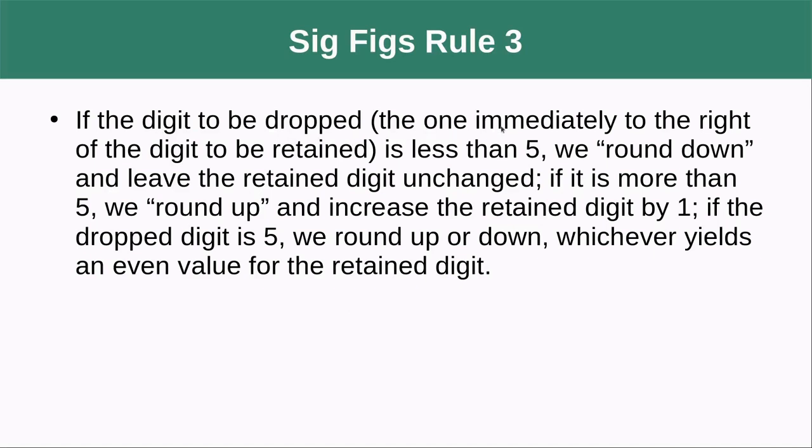If the digit to be dropped, the one immediately to the right of the digit to be retained, is less than five, we round down and leave the retained digit unchanged. If it is more than five, we round up and increase the retained digit by one. If the dropped digit is five, we round up or down whichever yields an even value for the retained digit. So there's a little caveat here.